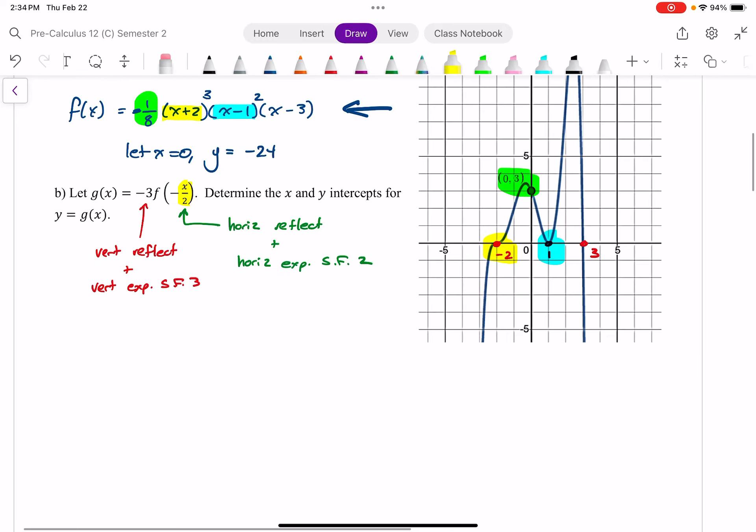And so now let's think about how this will affect the x and y-intercepts. Let's start with the x-intercept. I can see the x-intercepts are at negative 2, 1, and 3. Well, the vertical transformations will have no effect on the x-intercepts. So I just need to focus on this horizontal reflection and horizontal expansion, which means all of these are going to have their signs change from a negative to a positive and vice versa. And all of them will be doubled because the scale factor is 2. So the x-intercepts of g of x must be 4, negative 2, and negative 6.